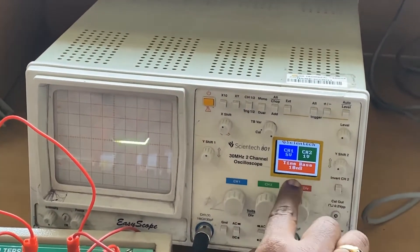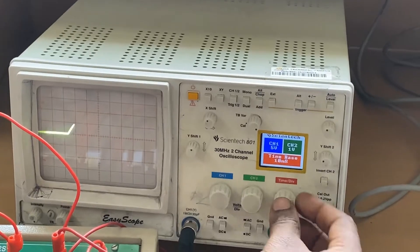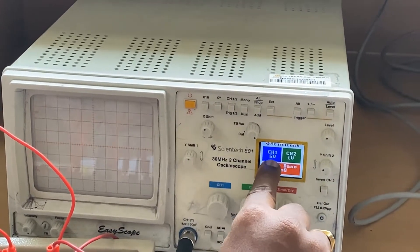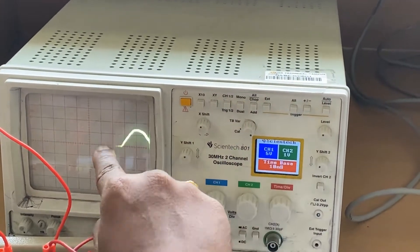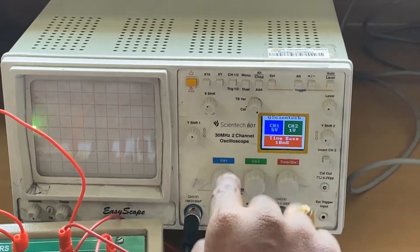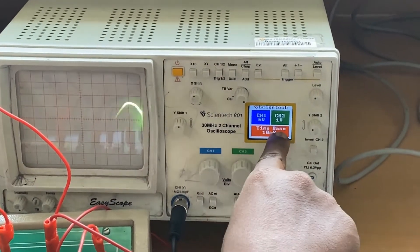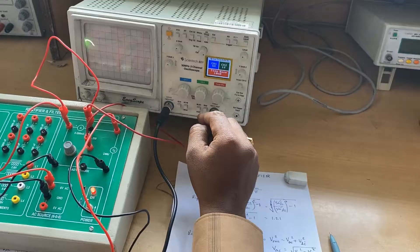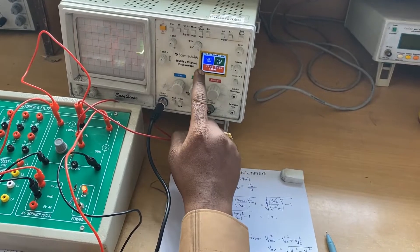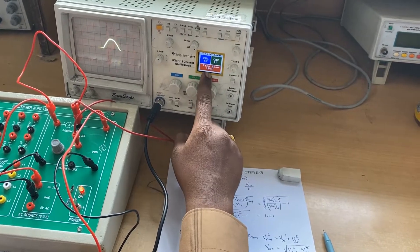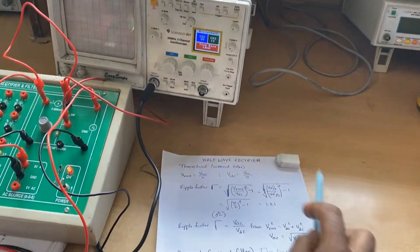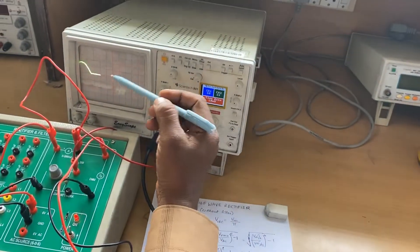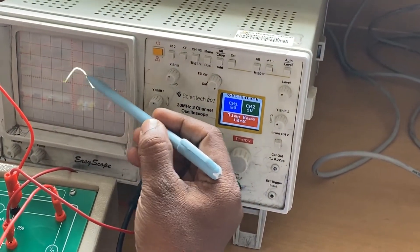Here is the time per division setting, and channel 1 is set to 5 volts per division — meaning the voltage scale is 5 V/div. The time base is 10 milliseconds per division. Now, how are you going to read the values? Observe the divisions on the screen.